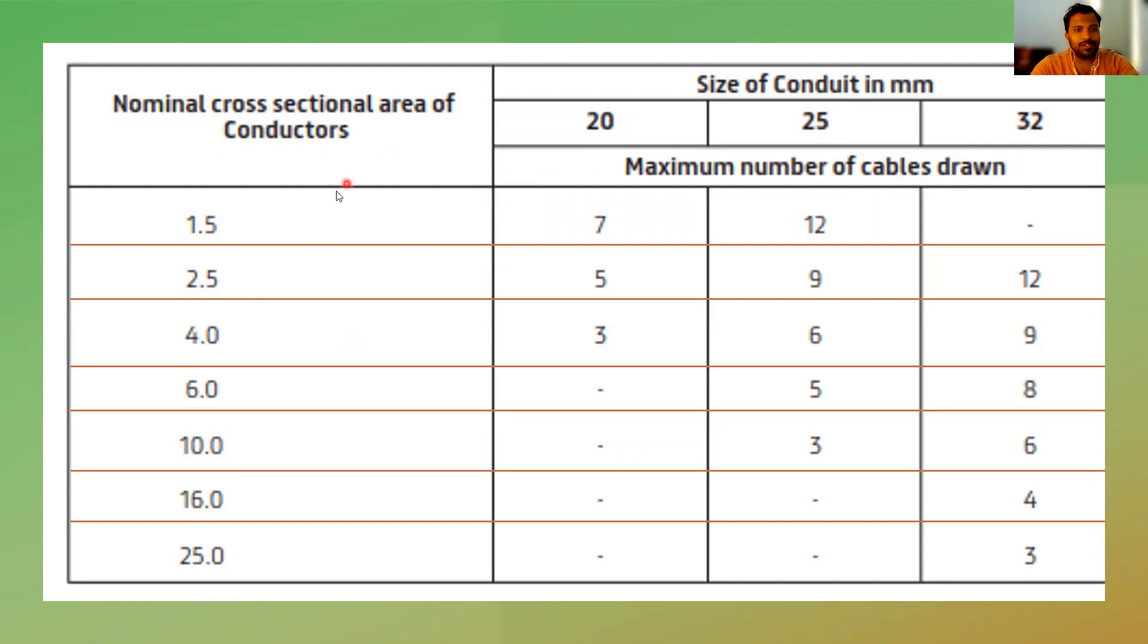So here in this chart, you will see the nominal cross-sectional area of single core wires, 1.5 to 25 mm, in the 20, 25, 32 mm conduit sections. So in the 20 mm conduit, what is the limitation? In 20 mm conduit, you can draw 7 number of wires.